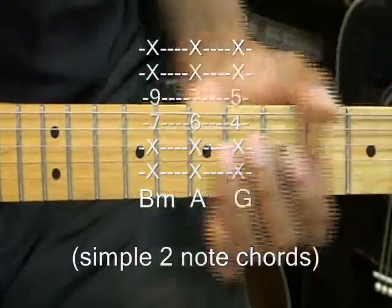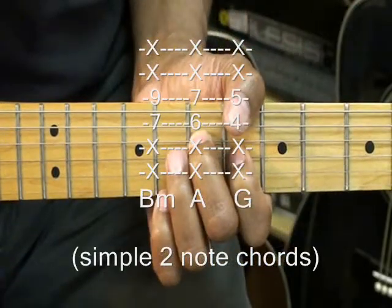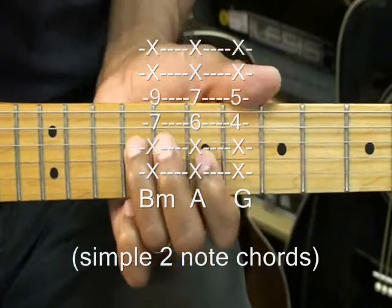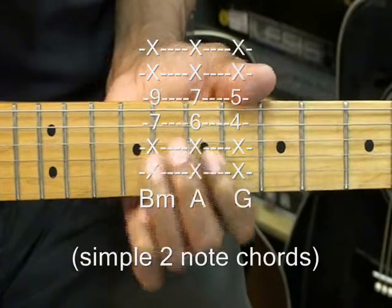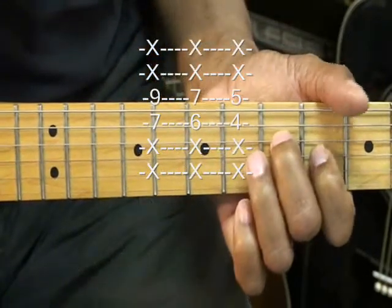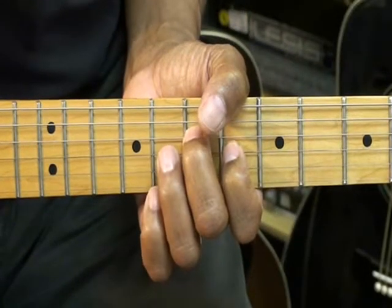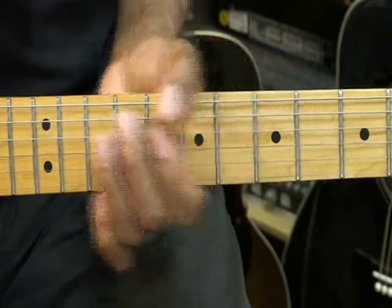And that's what we'll use those for, just for little licks. That was B minor, A, G, and then A.